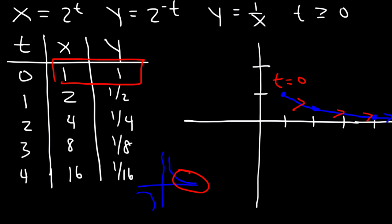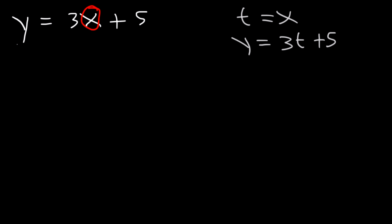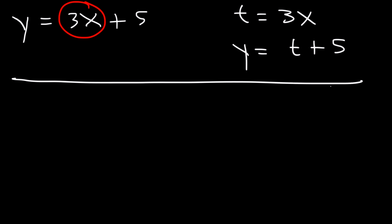We've talked about eliminating the parameter t — but what about adding it? For example, if y = 3x + 5, replace 3x with t, so t = 3x meaning x = t/3, and then y = t + 5. That's a simple way to turn a rectangular equation into a parametric equation.